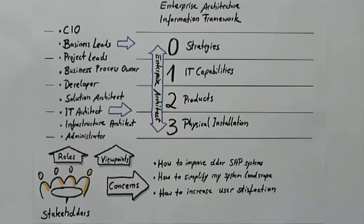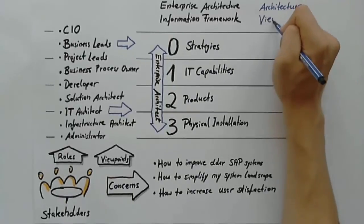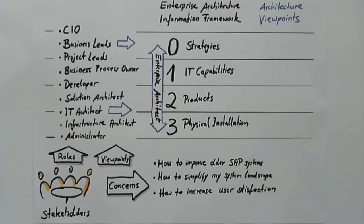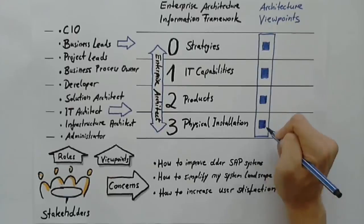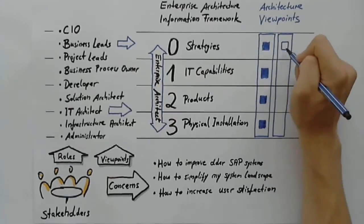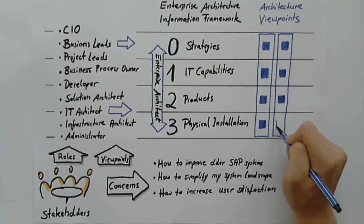How can these users be satisfied with a better user experience? Some concerns can be solved within one level; others require cooperation between roles in all levels. It is these concerns that interest us the most. Our idea is to collect common customer concerns, describe them and attach them to what we call architecture viewpoints. These architecture viewpoints provide information about the major elements in all relevant levels to tackle these concerns.